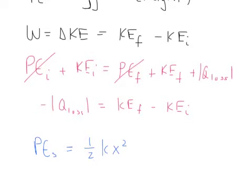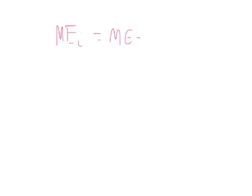Let's go to 5.3: conservation of energy. Mechanical energy is always conserved. This is the formula you're going to be given on your formula sheet. You need to know what it means: the energy at the beginning is the same as the energy at the end. The types of energy we could have are potential, kinetic, and elastic.